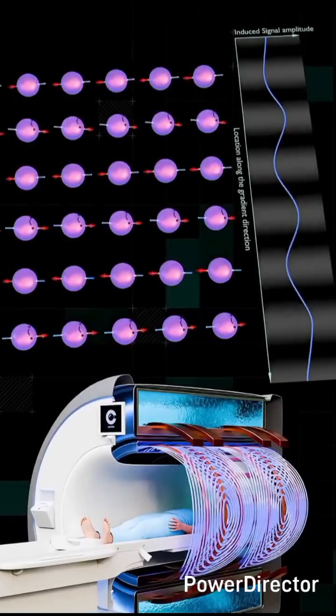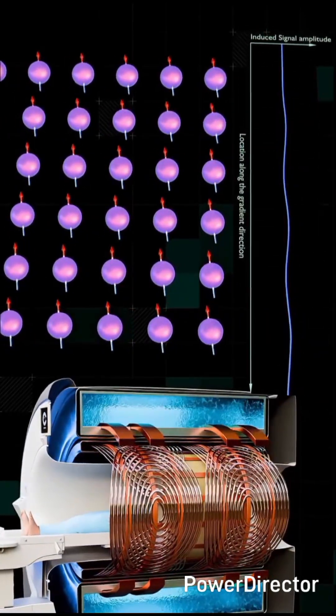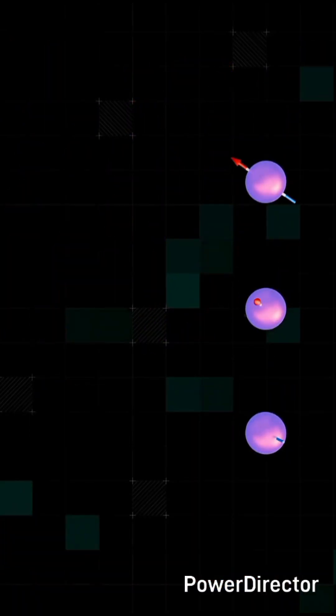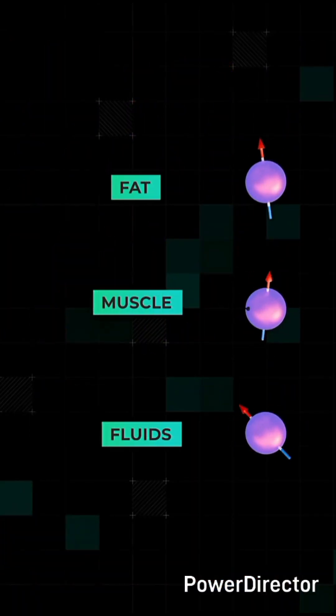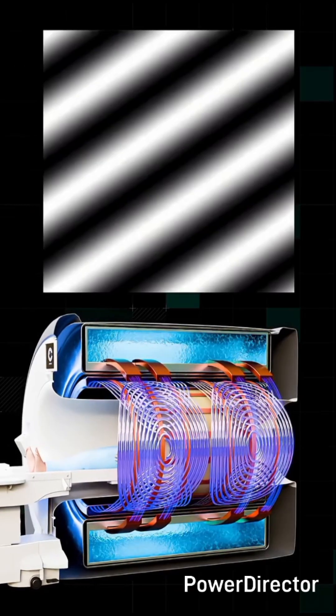After the RF and gradient coils are turned off, the spins gradually lose sync and drift back to their original alignment along the main field. This recovery happens at different speeds in different tissues in the body that make fat, muscle, and fluids distinguishable. Each activation of the system captures one of these striped patterns.